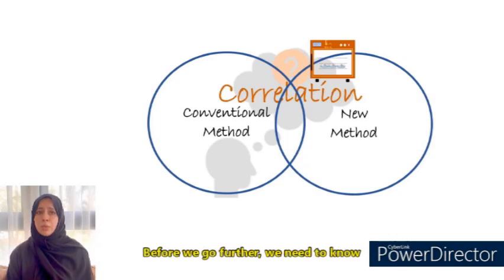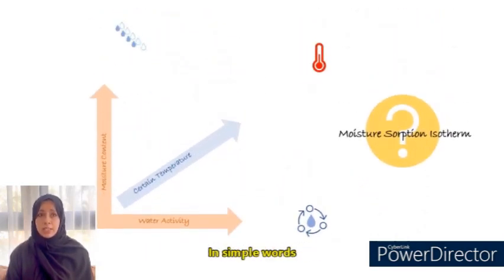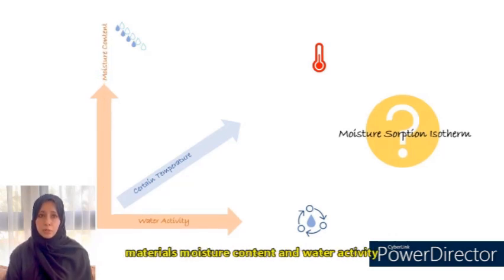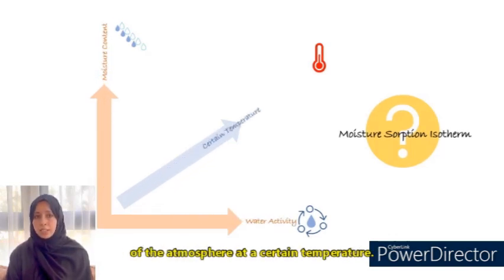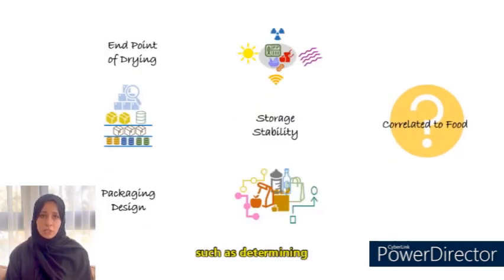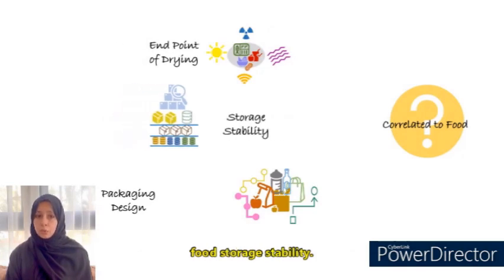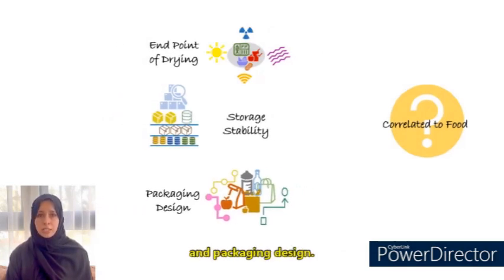Before we go further, we need to understand what a sorption isotherm is. In simple words, it is the relationship between the material's moisture content and water activity of the atmosphere at a certain temperature, and it is correlated to food in many ways, such as determining the end point of food drying, food storage stability, and packaging design.